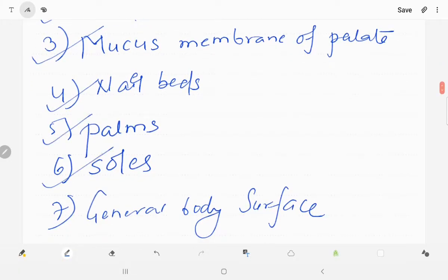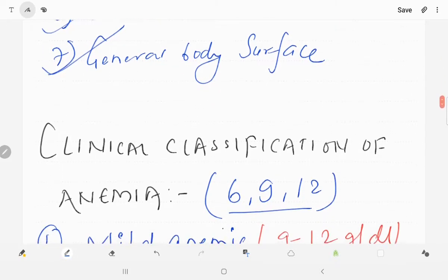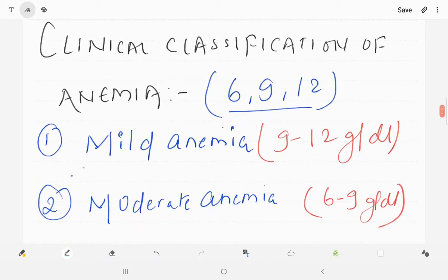Palms, soles, and general body surface. In this video we will be only talking about clinical classification of anemia. There are other etiological classification and morphological classification that we will be talking about in our upcoming videos. But for this video we will be dealing only clinical classification of anemia. So for that remember these three numbers: 6, 9, and 12.